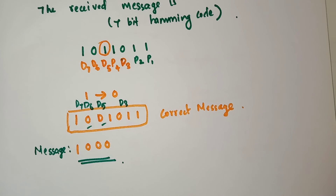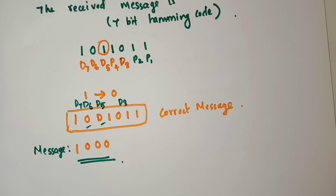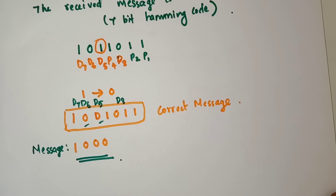We want to remember one thing: we convert the parity bit results into a decimal value, and this decimal value gives the position containing the error. For example, if the decimal value is 5, then the 5th position contains the error bit. For correcting the error bit, we invert the value — that means 1 changed to 0 and 0 changed to 1 — then we get the correct message.